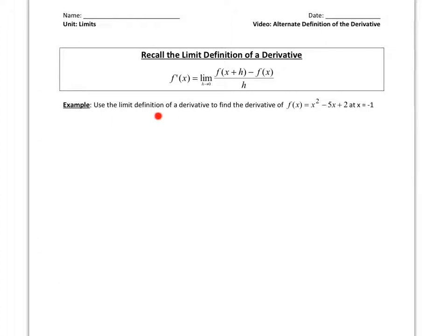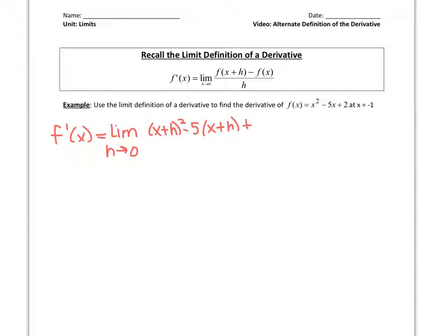I want to use this limit definition of a derivative to find the derivative of this function at x equals negative 1. We're first going to start off with f prime of x equals the limit as h approaches 0 of f of x plus h. Basically what I'm doing is putting x plus h everywhere I see an x.